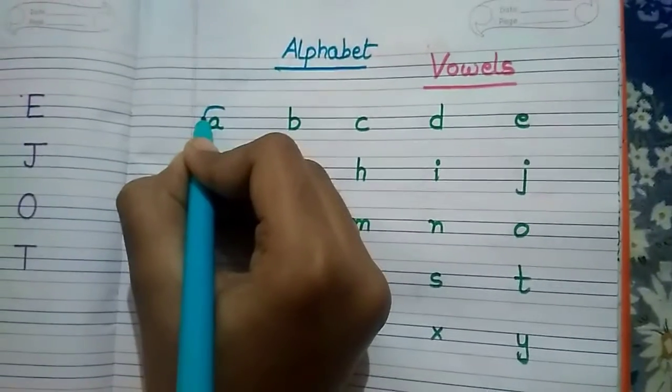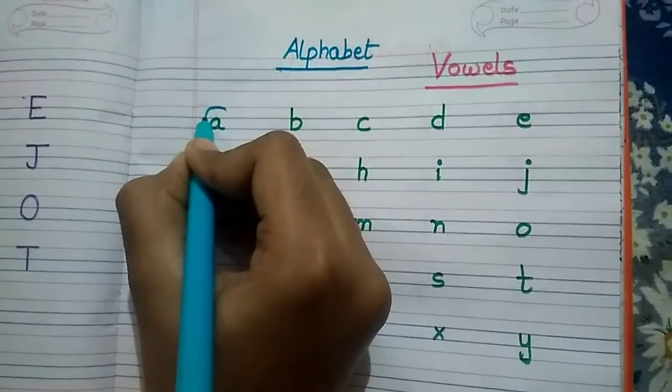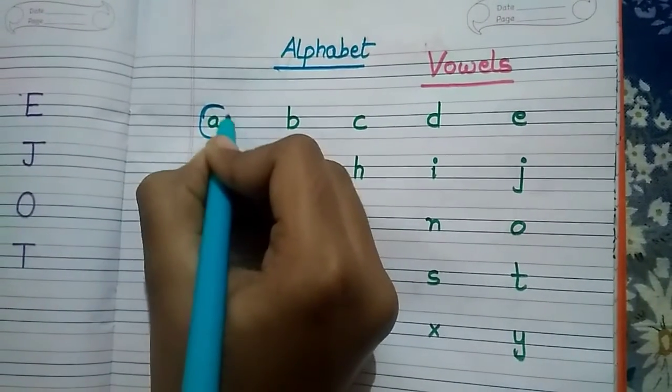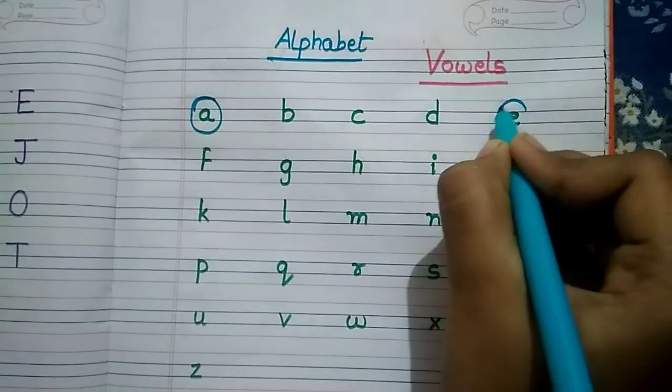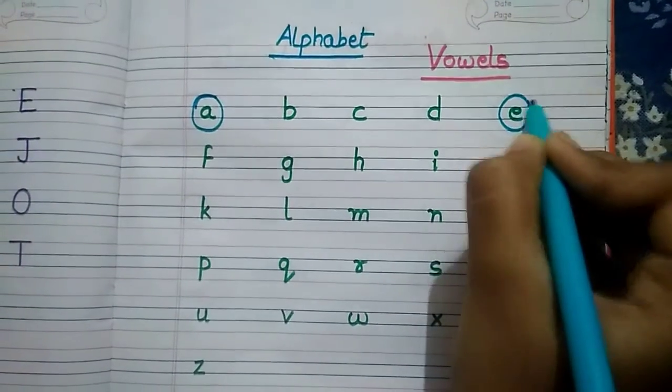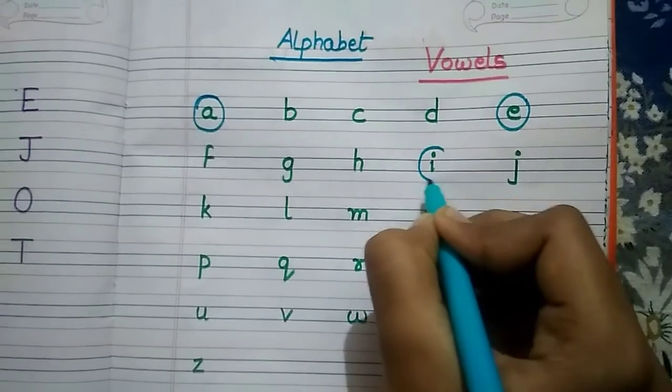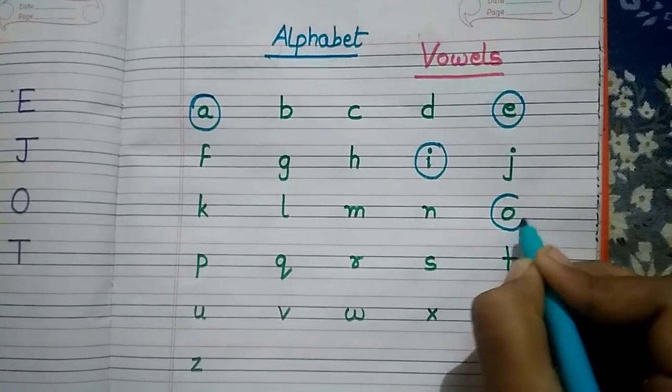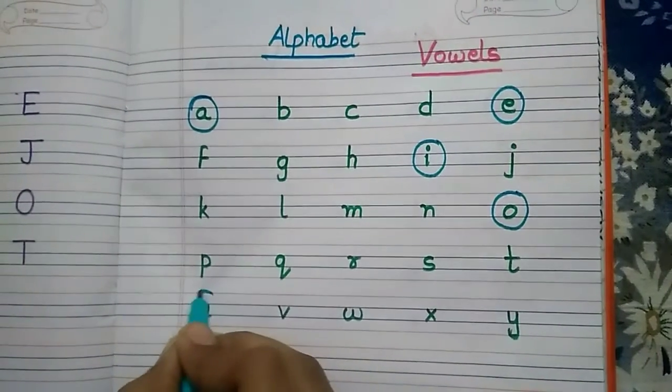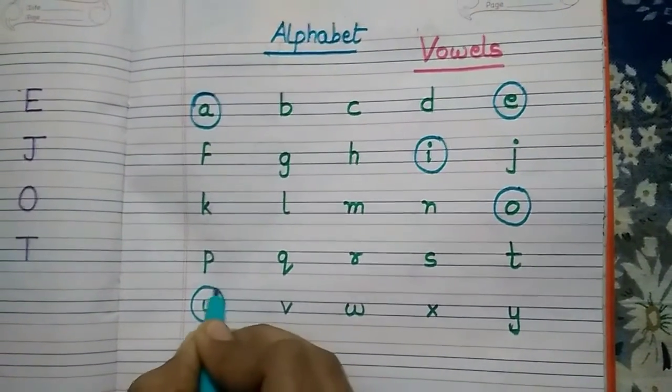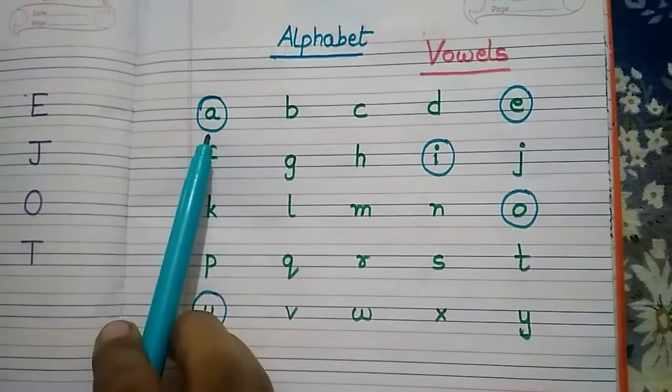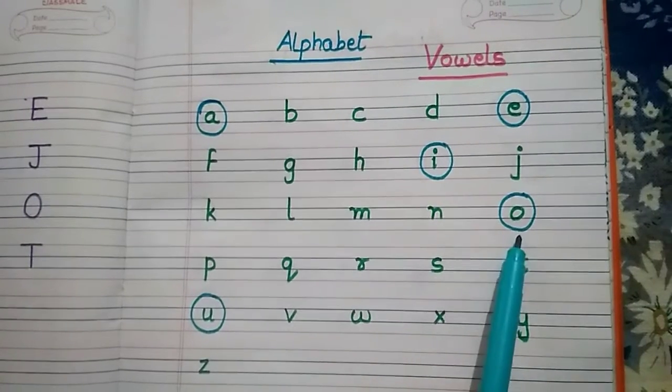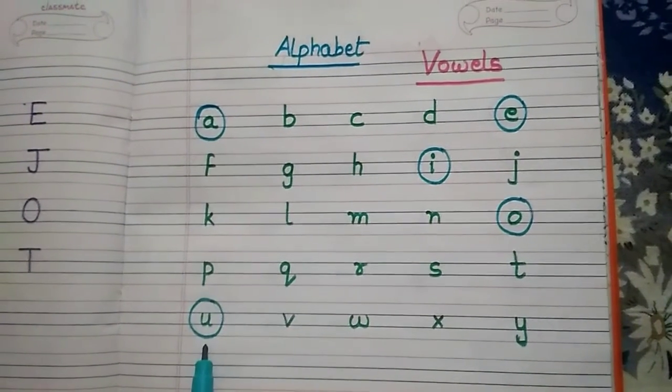So let's see how many vowels are here. Let's start. First one is a, second is e, third vowel is i, fourth one is o, and fifth one is u.